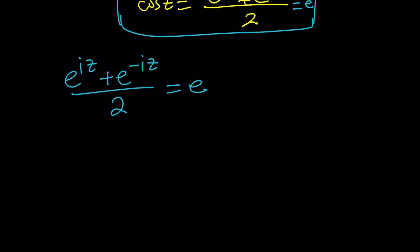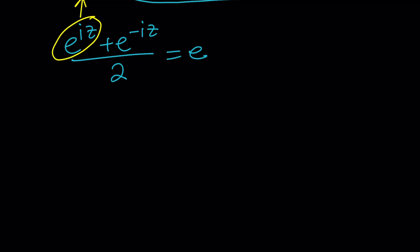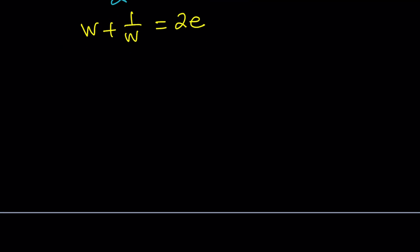How do you do that? Let's go ahead and write e to the iz as something. How about using substitution? Let's call this w, since that's going to be another complex number. And this gives us w plus 1 over w. And if you cross multiply, w squared plus 1 equals 2ew. And then w squared minus 2ew plus 1 equals 0. So that's going to be our quadratic equation. We need to solve it and then back substitute.